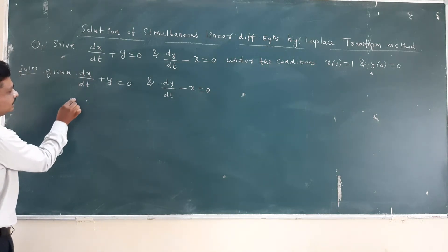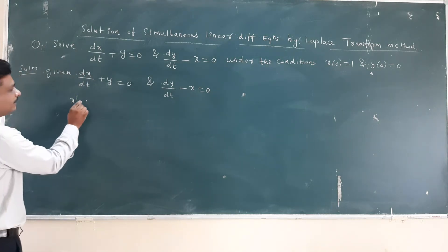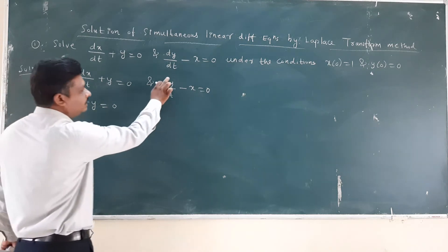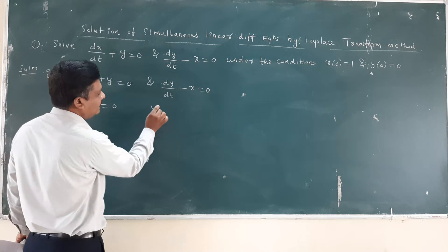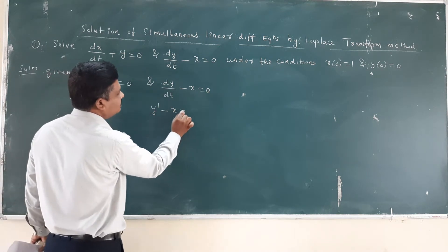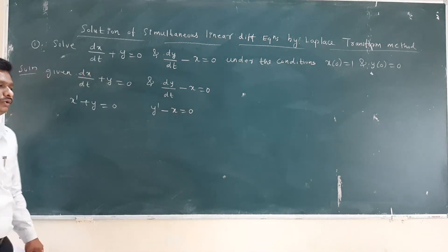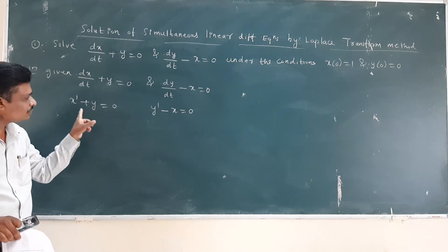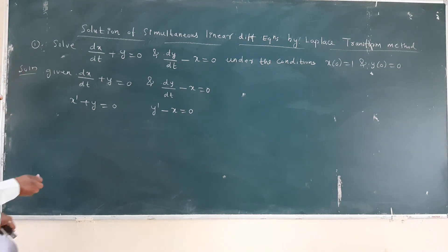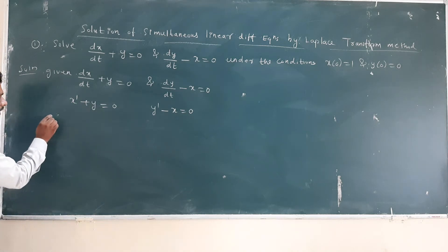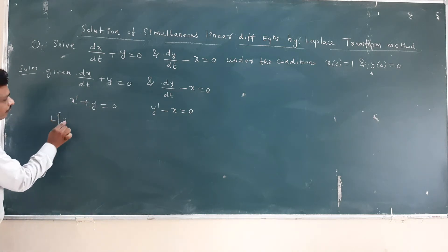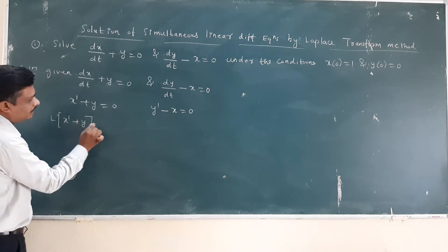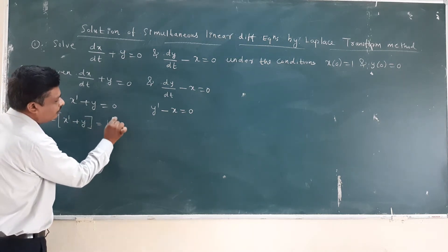So this becomes x' + y = 0, and dividing by dt this becomes y' - x = 0. Now I will apply Laplace on both sides of the equation. Taking Laplace on both sides, we get L{x' + y} = L{0}.